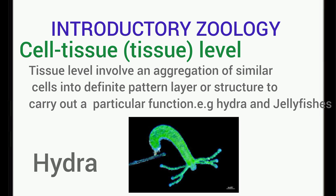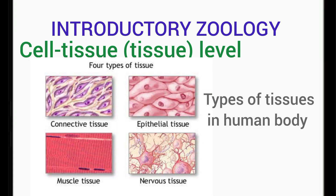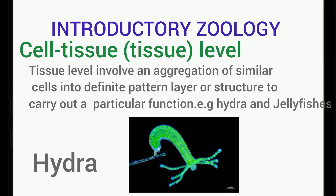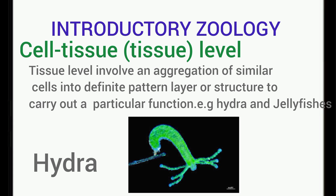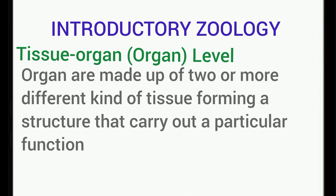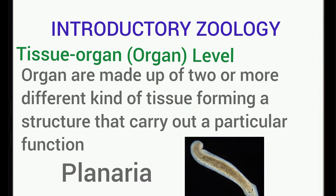Tissue levels involve an aggregation of similar cells forming a structure that performs a particular function, such as in hydra and jellyfish. The organ level involves two or more different tissues forming a structure that performs a particular function. Note that various organs exist in our body, but organ levels of organization first appear in flatworms in animals.